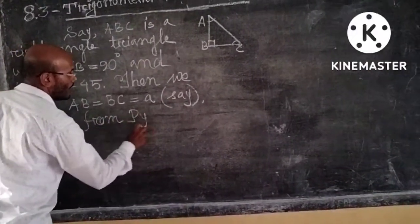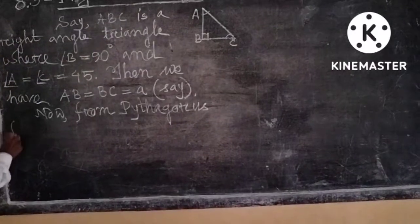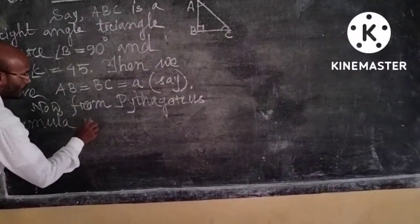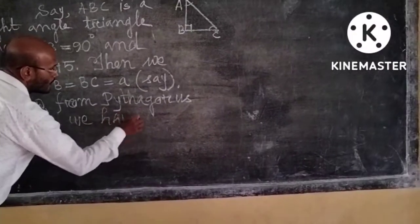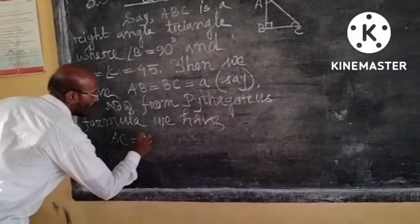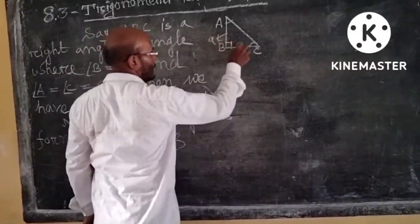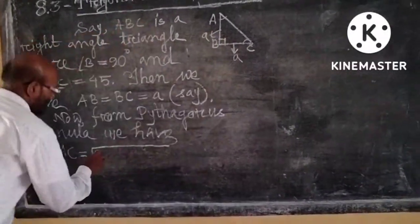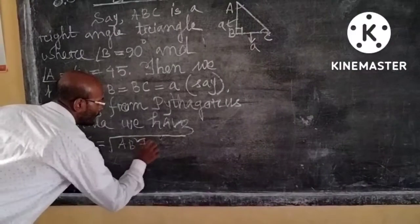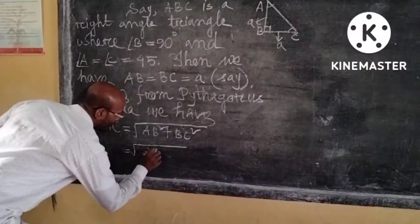Using the Pythagorean formula, we find side AC. AC is equal to root over AB squared plus BC squared. Since AB is A and BC is also A, putting in the values we have root over A squared plus A squared.